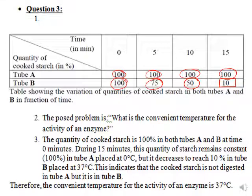Represent in the same table: at times 0, 5, 10, 15 minutes, tube A remains at 100%, while in tube B it decreases from 100 to 75 at 5 minutes, to 50 at 10 minutes, then to 10 after 15 minutes. The posed problem is: what is the convenient or suitable temperature for the activity of the enzyme — is it 0 or 37 degrees Celsius?